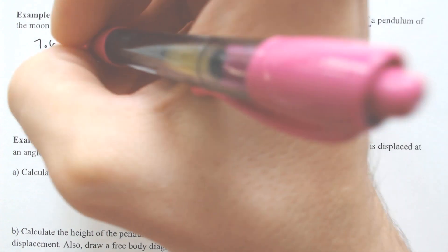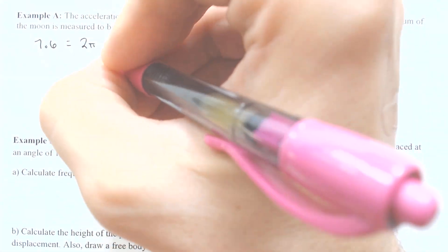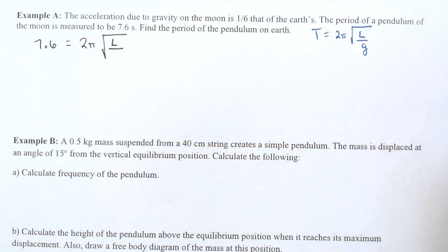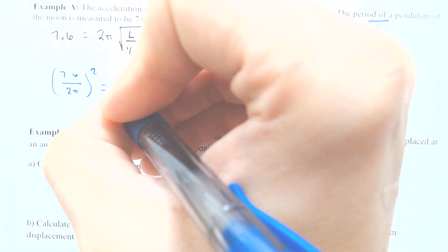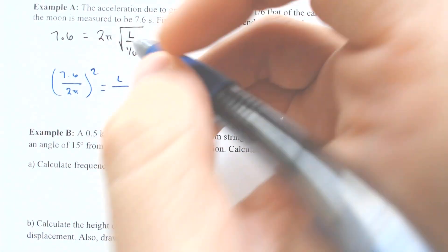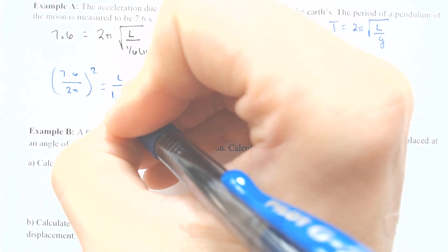Let's just figure out what it would be if we plugged in for the moon. 7.6 equals two pi times the square root of L divided by G, and we know that G is one-sixth of ten. So we can divide 7.6 by two pi, square both sides to get rid of the square root, and that would equal L times one-sixth of ten. One-sixth of ten is 1.6 repeating.